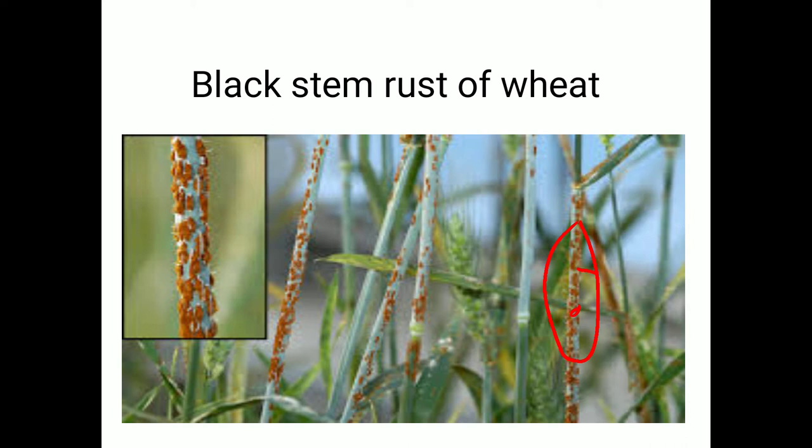Puccinia attacks mostly on the alternate host known as Berberis vulgaris or Mahonia aquifolia. These are the symptoms of black stem rust.